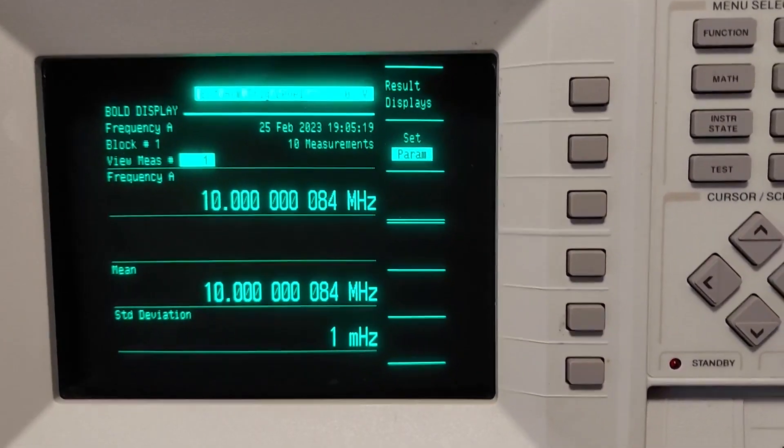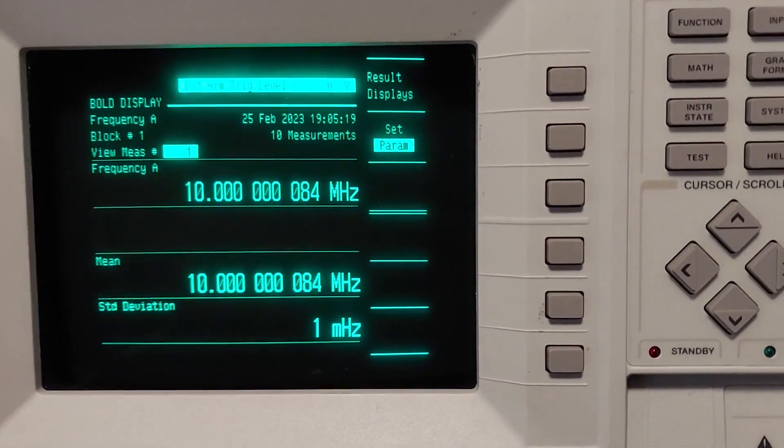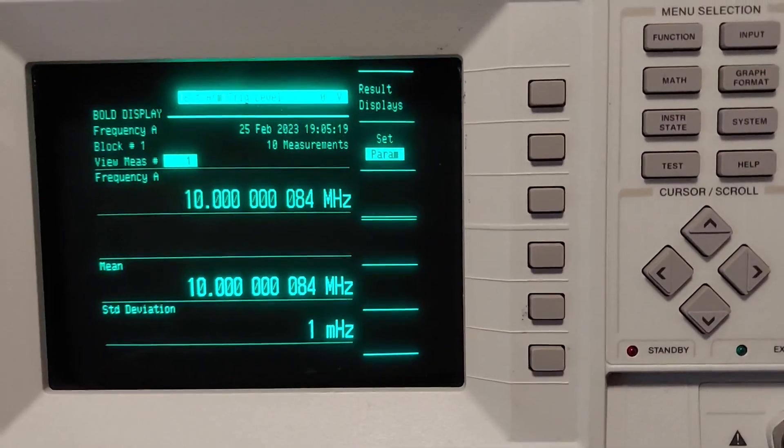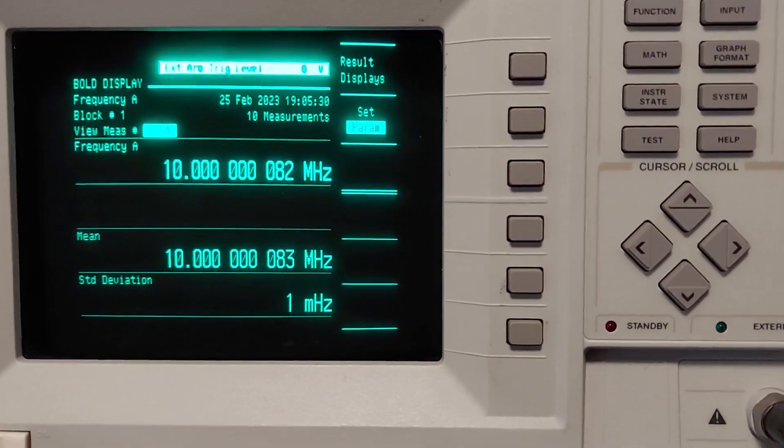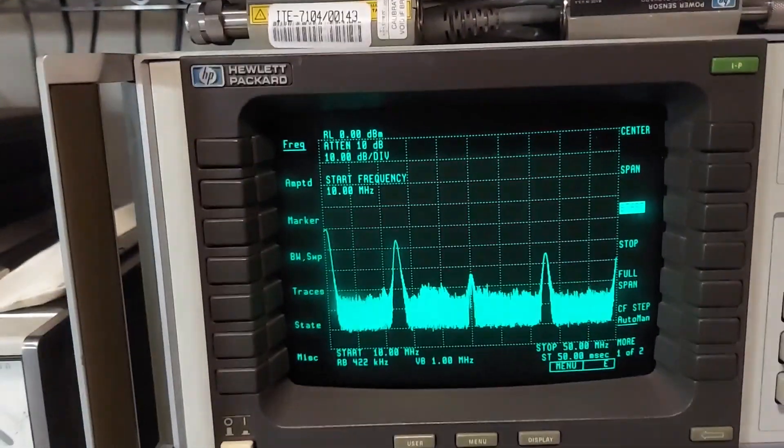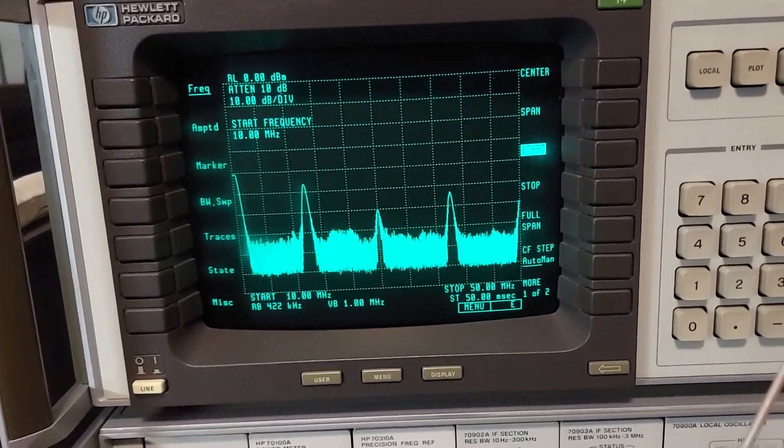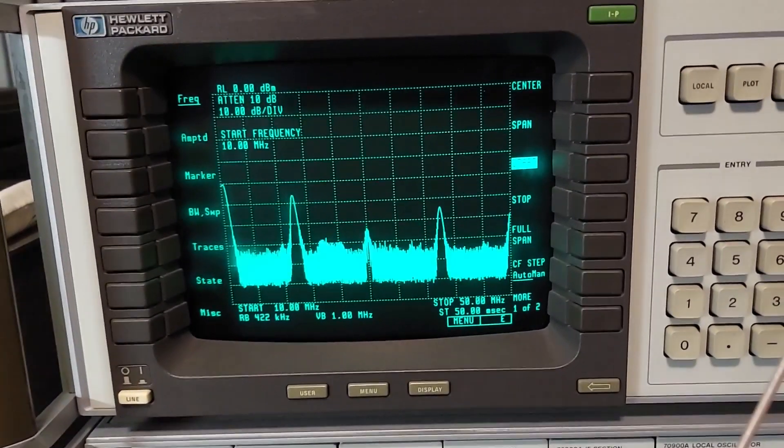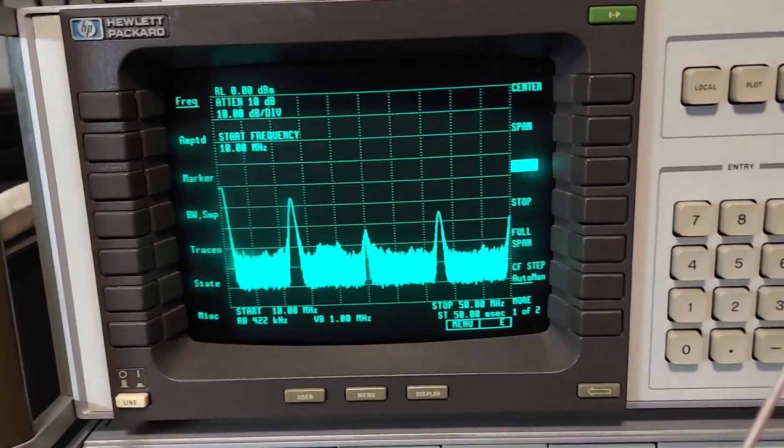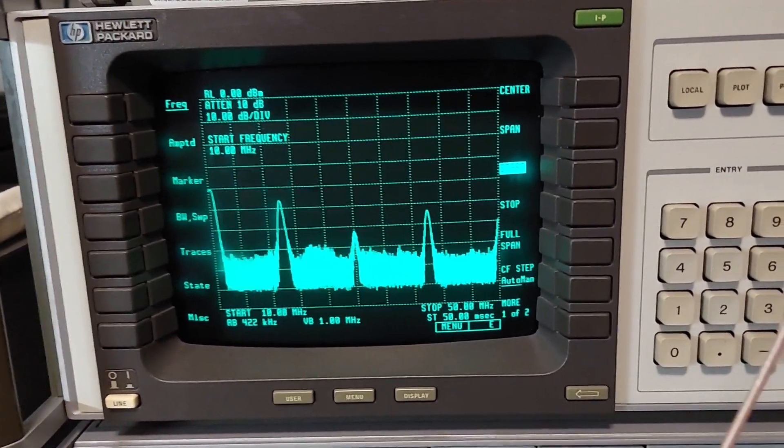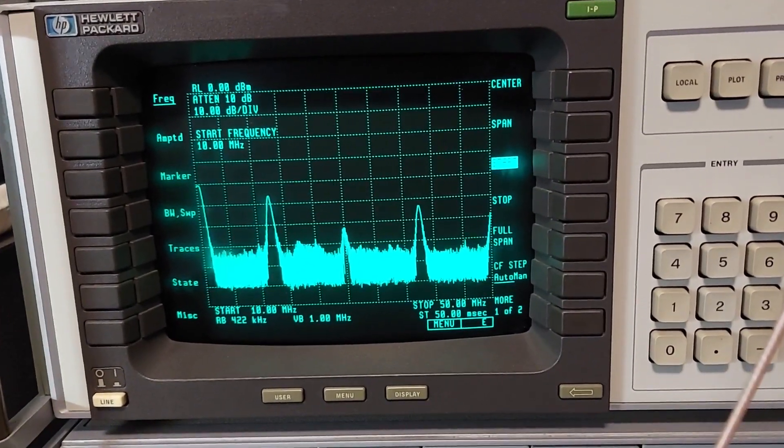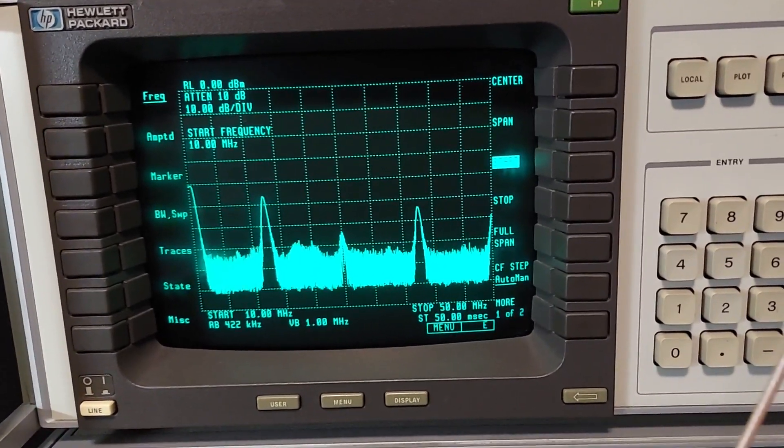According to my time interval analyzer, we're hovering around 84 millihertz high, which isn't too bad for a 40+ year old oscillator. I am picking up various harmonics - the second harmonic is almost as strong as the first one on the left. We've got 10, 20, 30, 40, and 50.